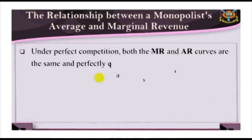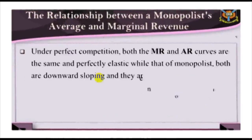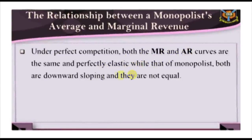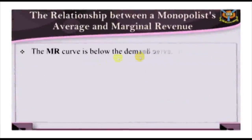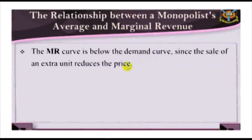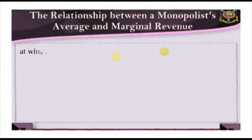There are some important differences between the average and marginal revenue of the monopolist and the perfectly competitive firm. Under perfect competition, both the marginal and average revenue curves are the same and perfectly elastic. In the case of the monopolist, both are downward-sloping and are not equal. The marginal revenue curve is below the demand curve, since the sale of an extra unit reduces the price at which all units are sold, resulting in a net addition to revenue of an amount less than its original price.